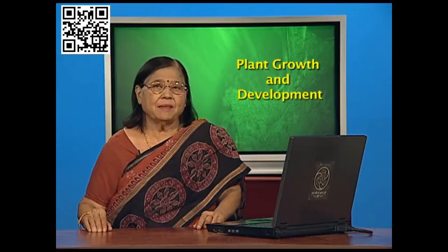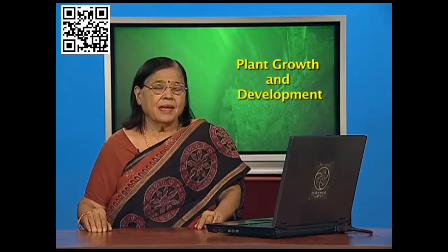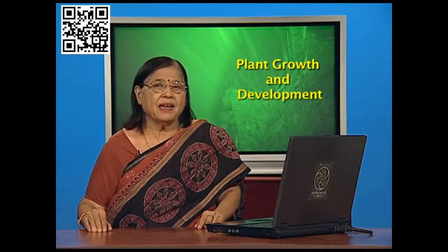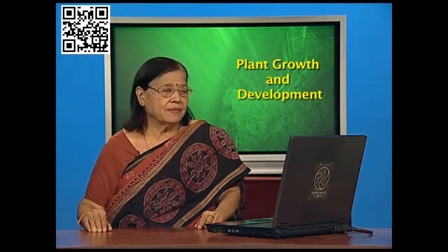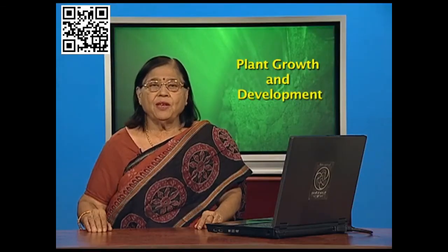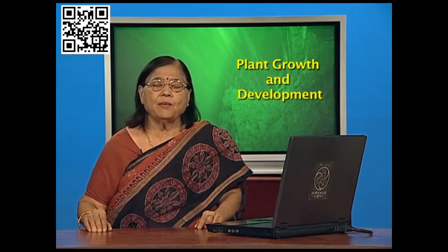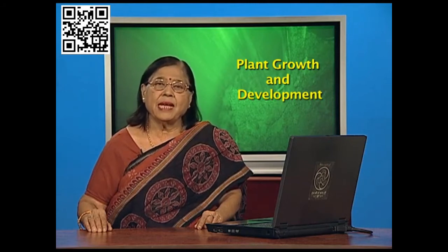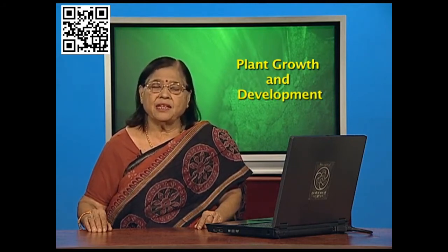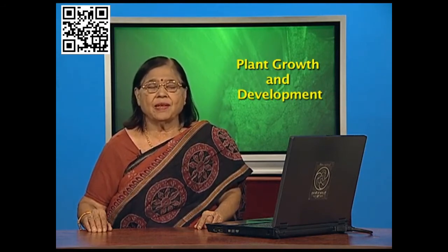Starting with auxins — a very important PGR with growth-regulating properties. All properties associated with this PGR help in promoting growth. Auxins are produced by the growing apices of stems and roots. When a seed is put in soil, the small shoot and root are growing, and at the tip of the shoot and tip of the root — the root apices and shoot apices — auxins are present, helping elongation.